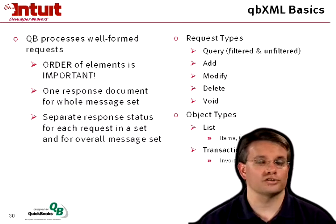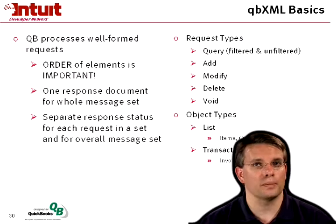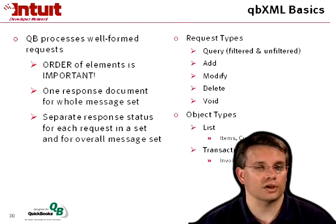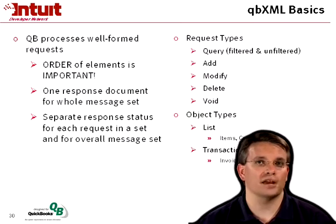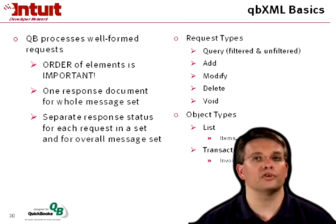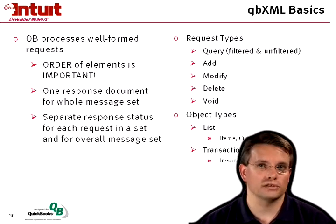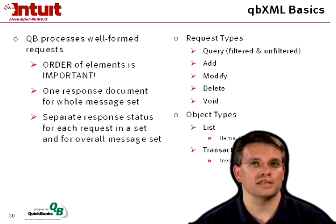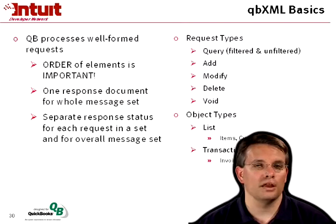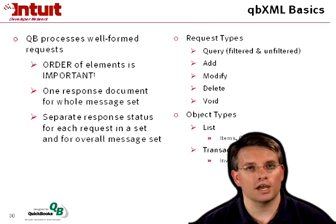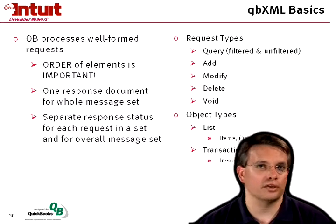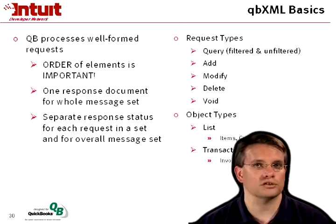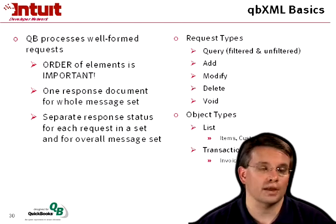There are several request types: queries (filtered or unfiltered), adds, modifies, deletes, and voids of transactions or lists. Be very careful with unfiltered queries — asking QuickBooks to return every customer or every invoice can produce an enormous XML document, which can be a memory problem as QuickBooks builds a gigantic string and sends it over COM. Object types are straightforward: list objects like customers, employees, and items, and transactions like invoices, bills, checks, and time tracking records.